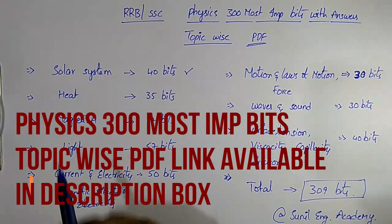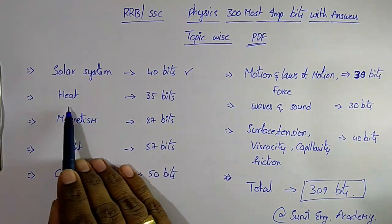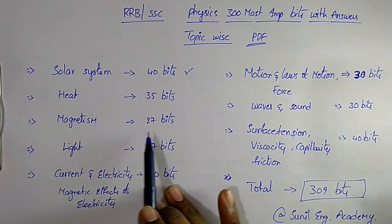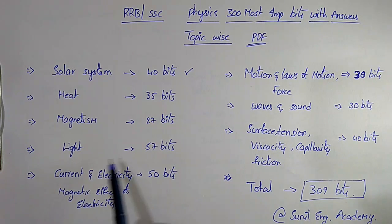I have covered in the topic solar system 40 important bits, heat 35 important bits, magnetism 27 bits, light that is both reflection, refraction, mirrors and lenses. In the topics, I have covered 57 important bits.